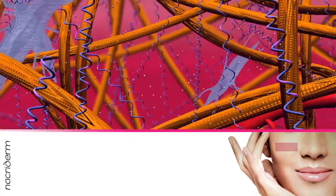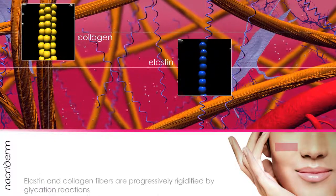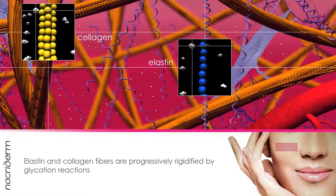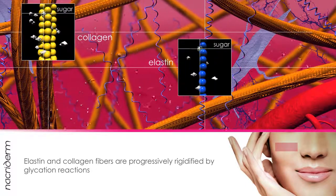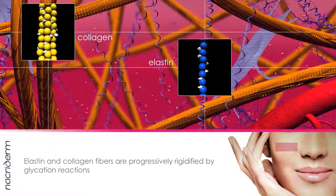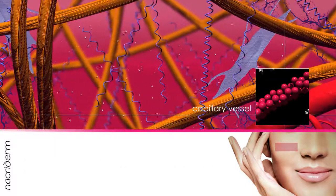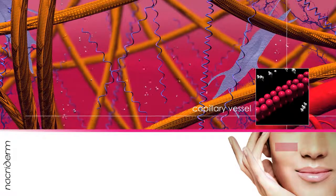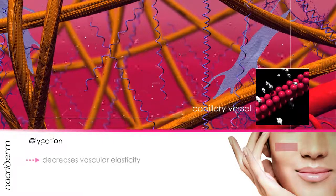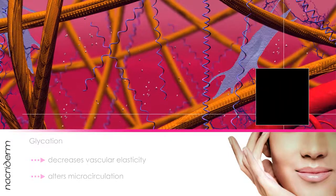In the dermis, elastic and collagen fibers are the protein structures most affected by glycation. Their peptide chains are progressively rigidified by the attachment of sugars, which in time form rigid bonds between fibers. In the same way, glycation affects capillary vessel walls, bringing about a decrease in vascular elasticity and an alteration in microcirculation.